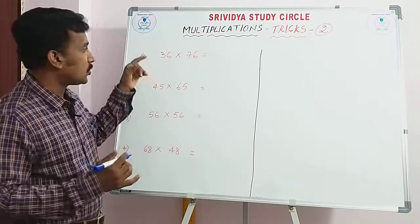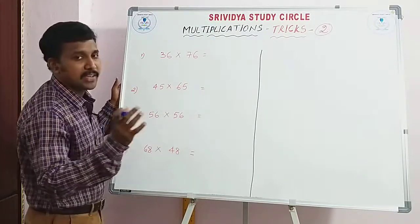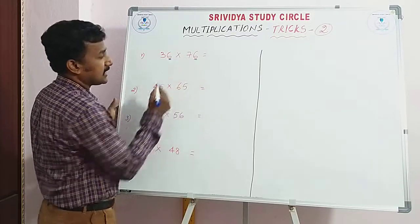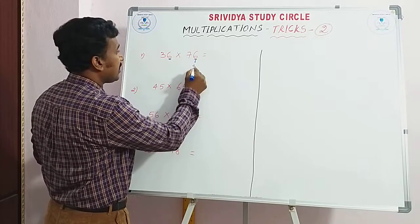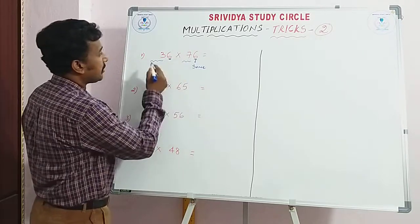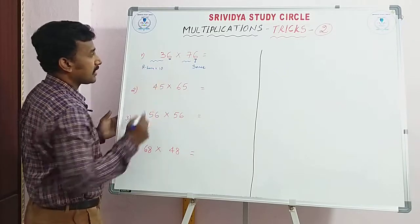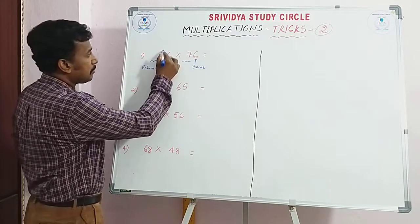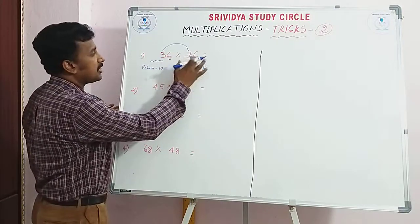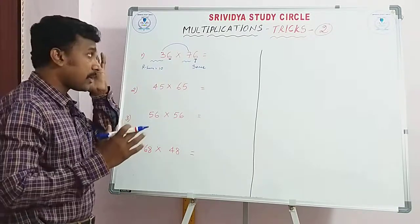See, in a fraction of seconds, how to do this multiplication. Take 36 into 76. Please observe the given numbers. In units digits, same. Difference here, same in units digits. The remaining digits, sum is equal to 10. Remaining digits — that is, 3 plus 7. Remaining digits, 10th place or 100th place, that is secondary. But what is the condition? Units digits same, and remaining digits sum 10. Then you can apply our trick.